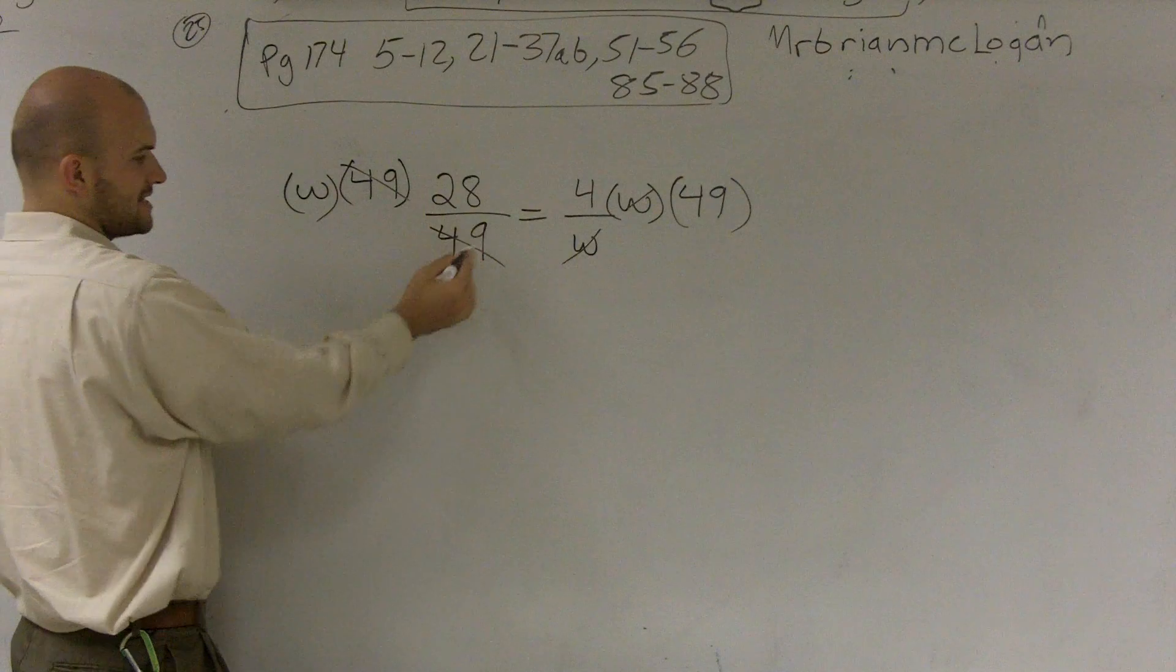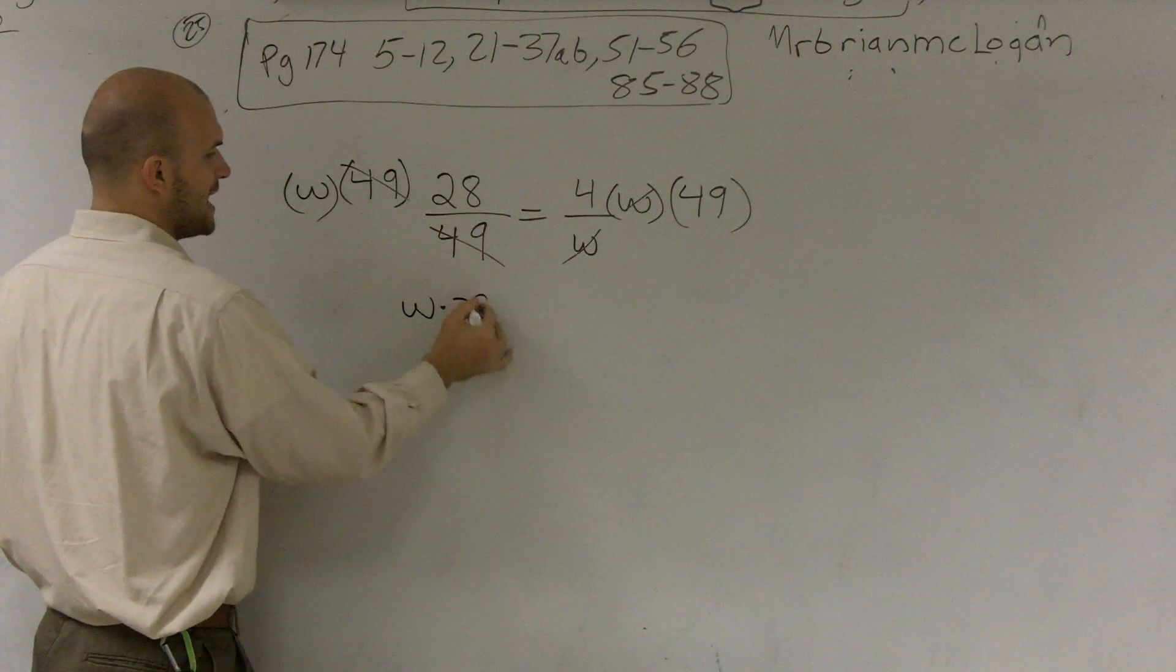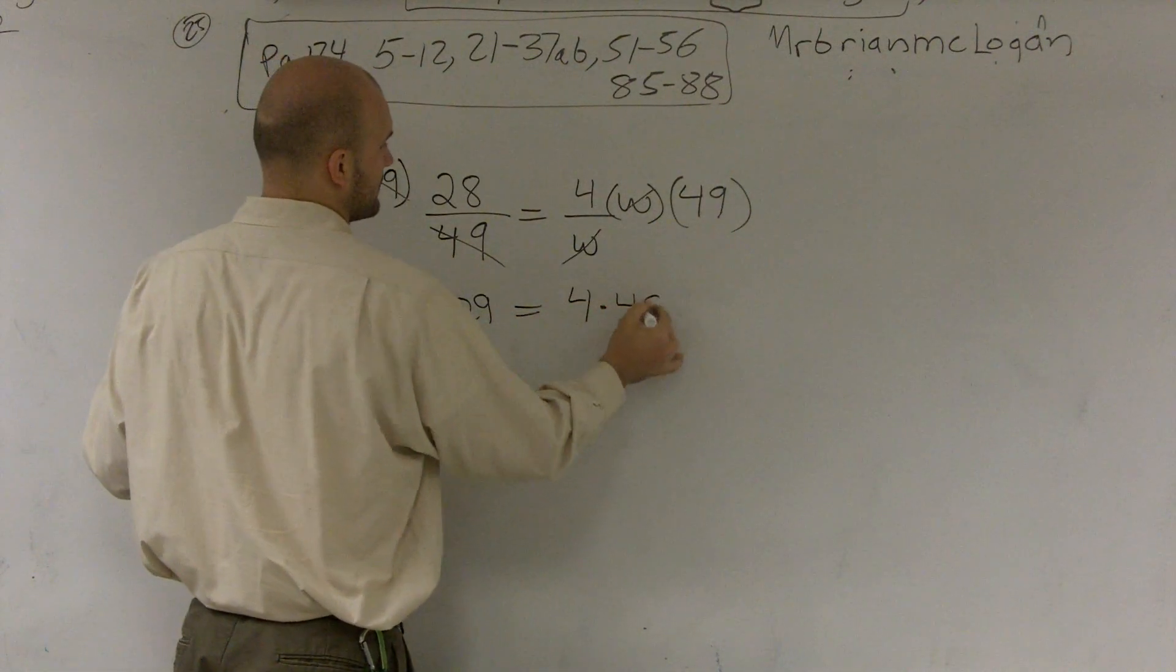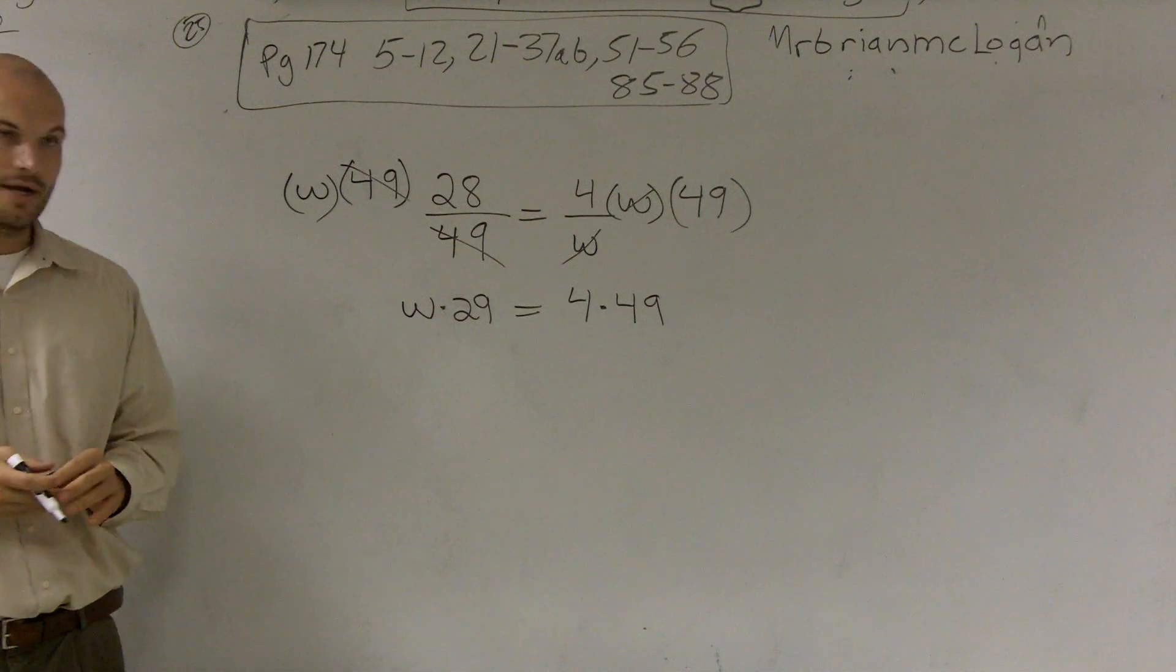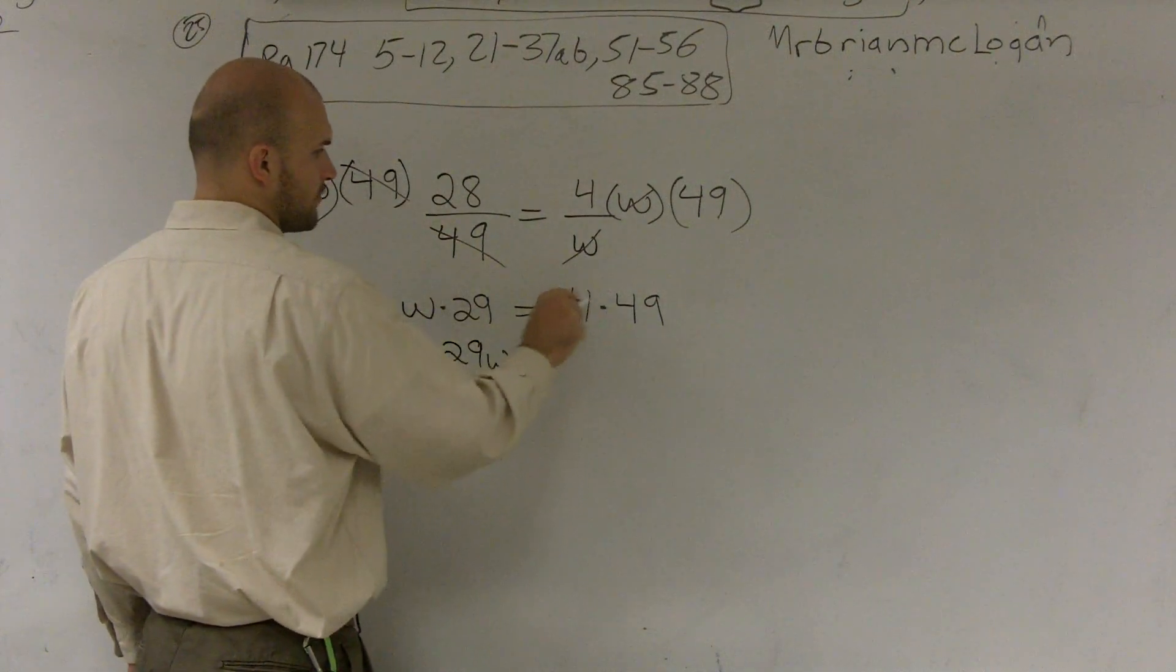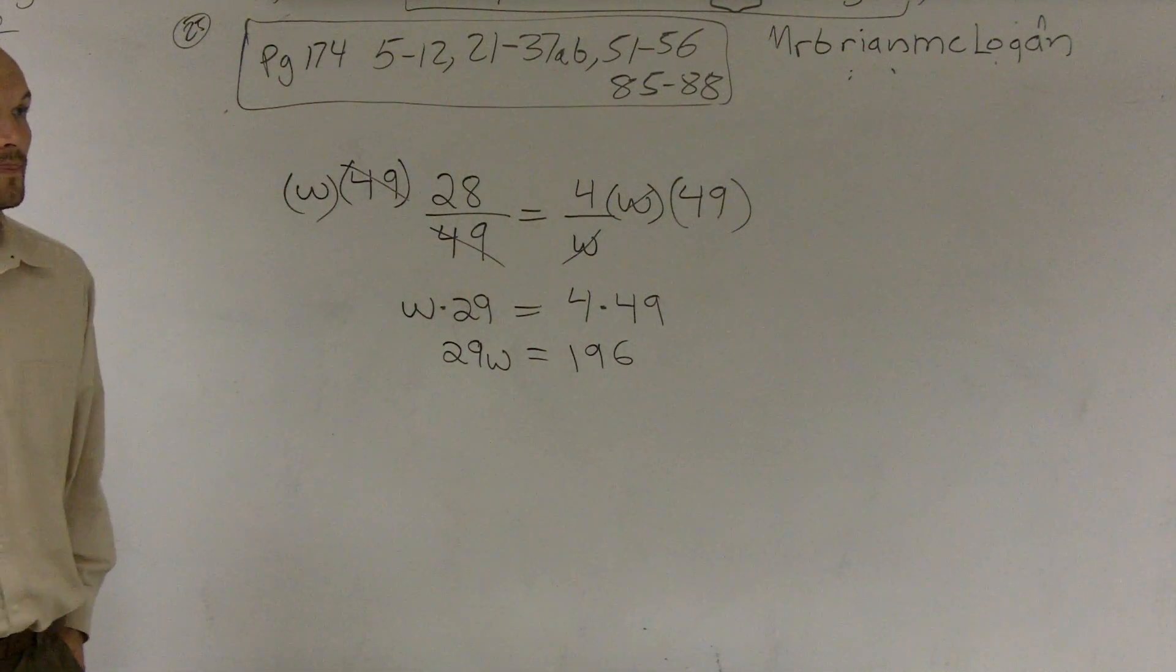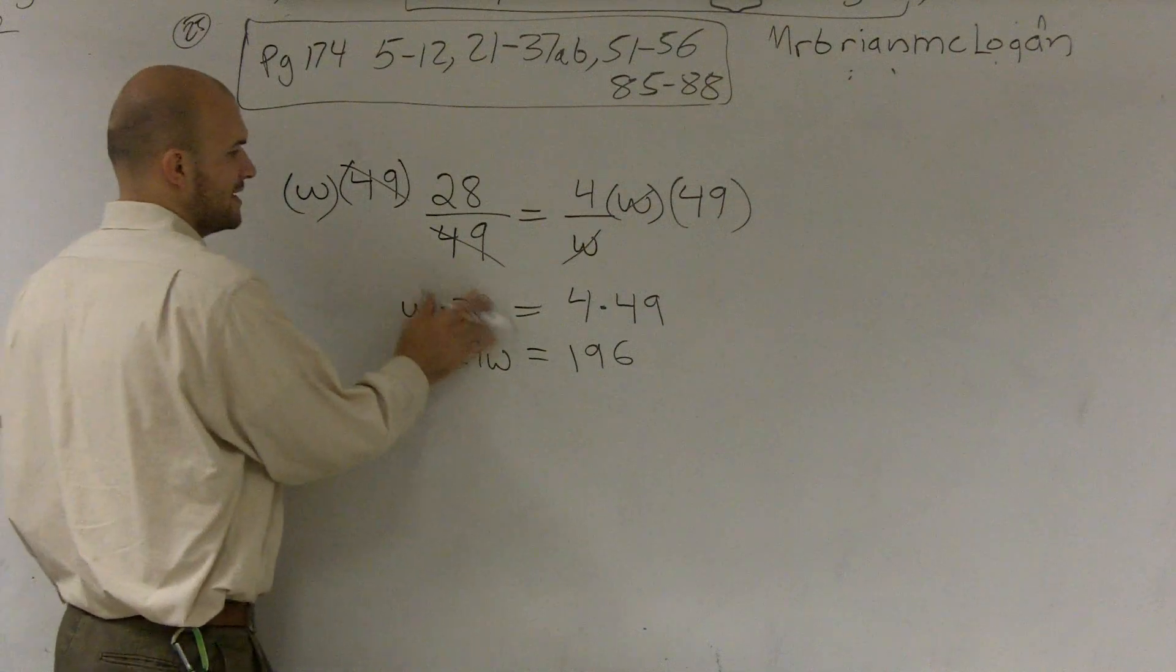So therefore, if these cancel out, I'm just left with w times 28 equals 4 times 49. Does everybody see that? And then this becomes, we kind of like to rewrite this as 28w equals 4 times 49 being 196. It's 28.